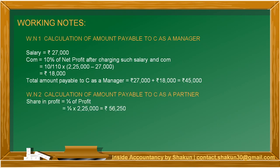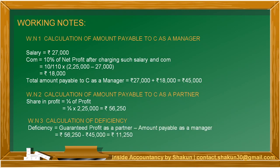The next step is to calculate the amount payable to C as a partner. As a partner, he was to get one-fourth share of profit: 1/4 × ₹2,25,000 = ₹56,250. Now we calculate the deficiency. The guaranteed amount is the greater one — ₹56,250. Minus the amount payable as a manager — ₹45,000. So the extra amount which C will get is ₹11,250. This ₹11,250 will be given to C and will be contributed by partner A.